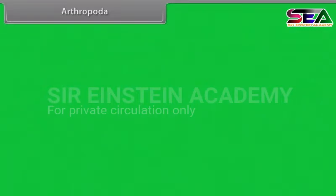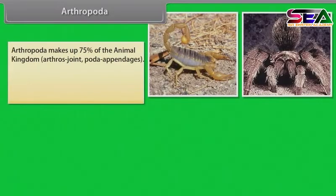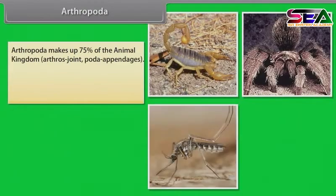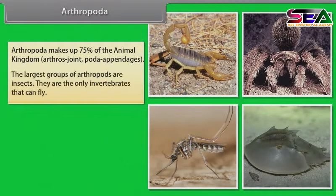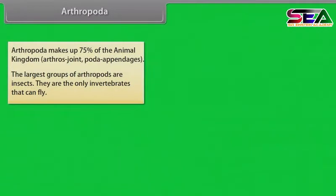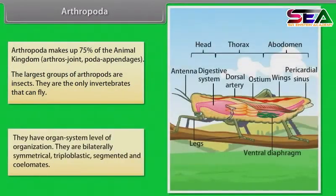Arthropoda makes up 75% of the animal kingdom. 'Arthros' means joint and 'poda' means appendages. The largest group of arthropods are insects — they are the only invertebrates that can fly. They have organ system level of organization.